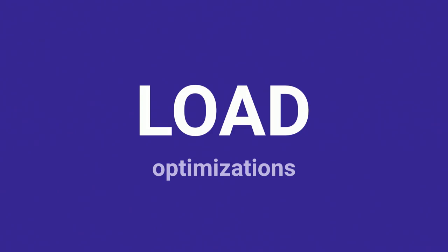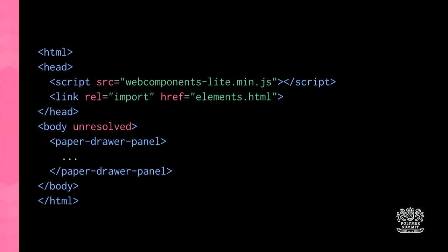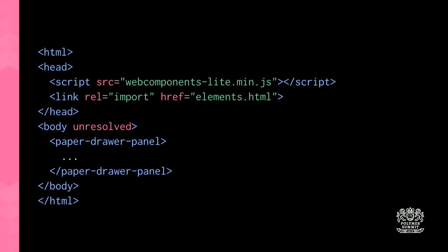Let's talk about load — what can we do to paint pixels to the screen as fast as possible? The basic scaffold of a typical Polymer application involves: first, loading the web components polyfill via a script tag, which now loads the Shady DOM polyfill instead of the full Shadow DOM polyfill; second, loading elements.html with all your element imports and dependencies; and third, the unresolved attribute on the body.